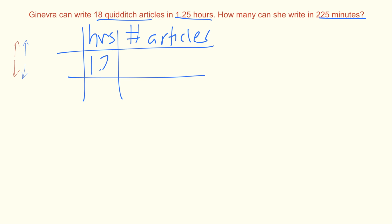In 1.25 hours Ginevra can write 18 Quidditch articles. Now be careful with the second set of information. We have it in minutes. We have to convert to have the same units everywhere. One hour is equal to 60 minutes, so 225 divided by 60 gives us 3.75 hours.